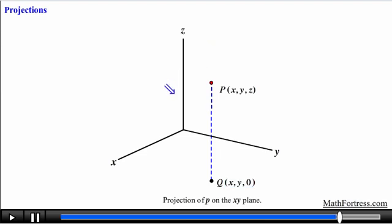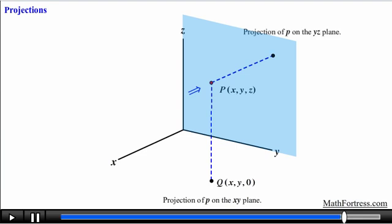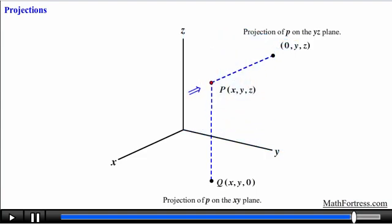If I look at point P from the first octant facing towards the y-z plane and shine a light at point P, it will cast a shadow directly across point P. This is the projection of P on the y-z plane, and has the same y and z coordinates as point P but has an x coordinate of 0. The equation of the y-z plane is x equals 0, so every point on this plane has 0 as its x coordinate. We denote the projection of P on the y-z plane as point R with coordinates (0, y, z).